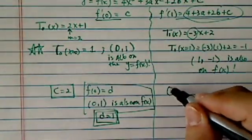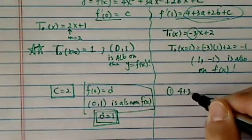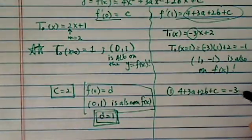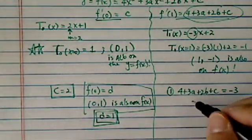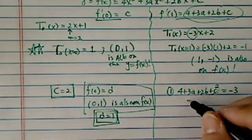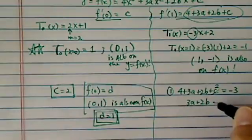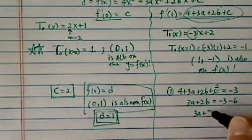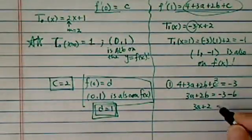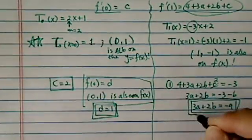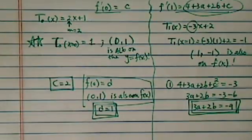Let's write it out: 4 plus 3a plus 2b plus c equals -3. Let's simplify. Since c equals 2, I have 3a plus 2b equals -3. Subtracting 6, I have 3a plus 2b equals -9. That's my first equation. I need another equation to solve for a and b, since I already have c and d.